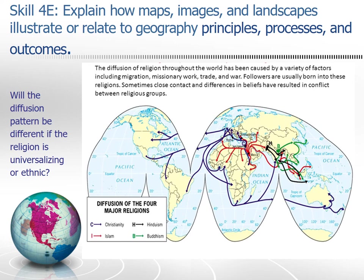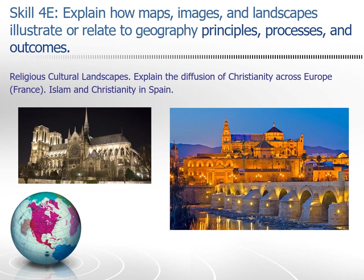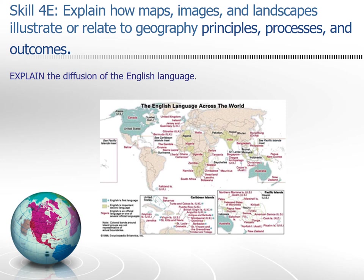Also with regards to 4E, here are a couple of images of religious cultural landscapes. Explain the diffusion of Christianity across Europe — there's Notre Dame on the left — and Islam and Christianity in Spain, with the Grand Mosque of Cordoba on the right. Another prompt: explain the diffusion of the English language. Why do we see so many English place names in so many places around the world? This would also relate to colonialism and imperialism.